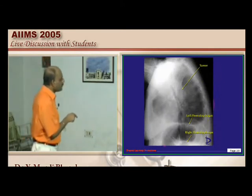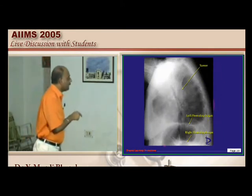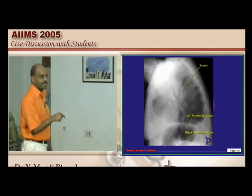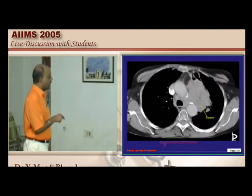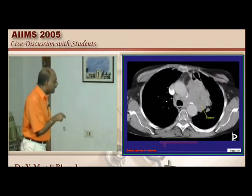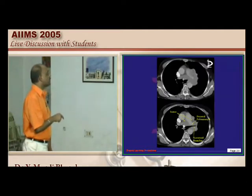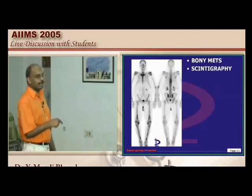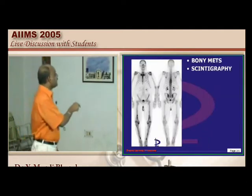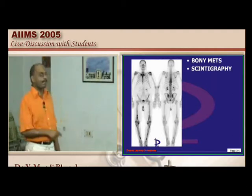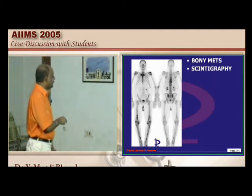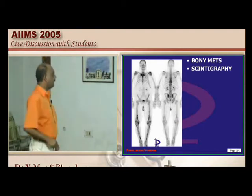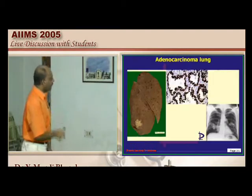Typically, small cell carcinoma is located in the perihilar region centrally. Sometimes even the pulmonary artery can become encased within the small cell carcinoma. Small cell carcinoma can metastasize so diffusely by the time of diagnosis — scintigraphy can reveal multiple bone metastases.